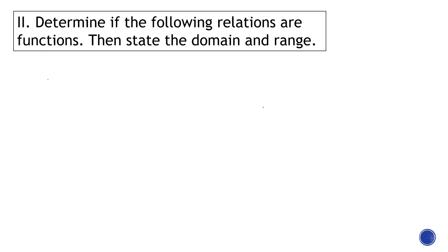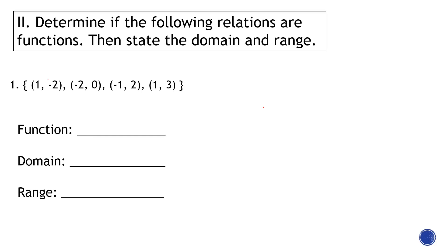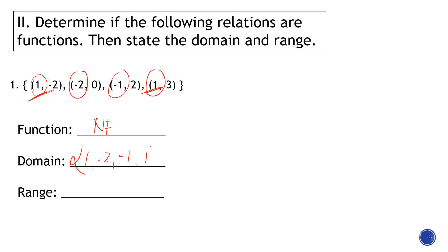Determine if the following relations are functions, then state the domain and range. For this first example, we have x-coordinates of 1, negative 2, negative 1, and 1 — we have two ones, therefore this is not a function. The domain consists of the x values: 1, negative 2, negative 1, and 1. The range consists of the y values: negative 2, 0, 2, and 3.